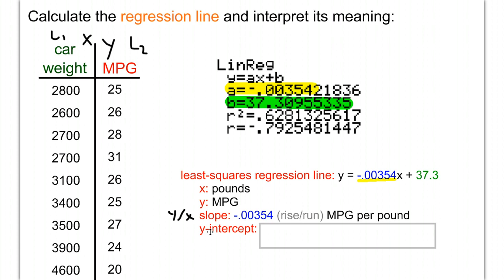Finally, the y-intercept is 37.3 at the end. The units are miles per gallon. It specifically refers to when x equals zero. In this problem, if x is the weight of the car in pounds, it's saying you would get 37.3 miles per gallon if your car weighed zero pounds.